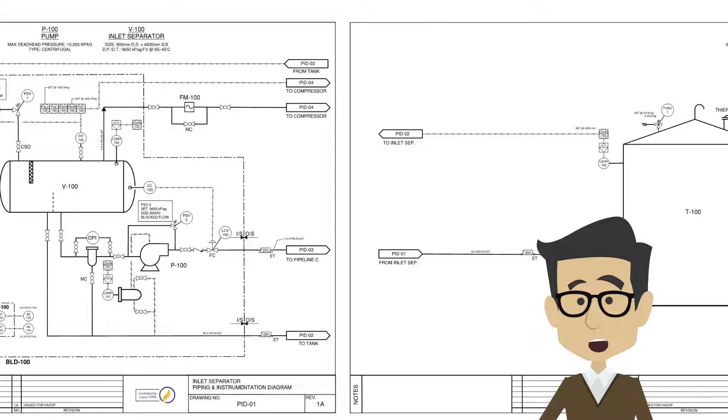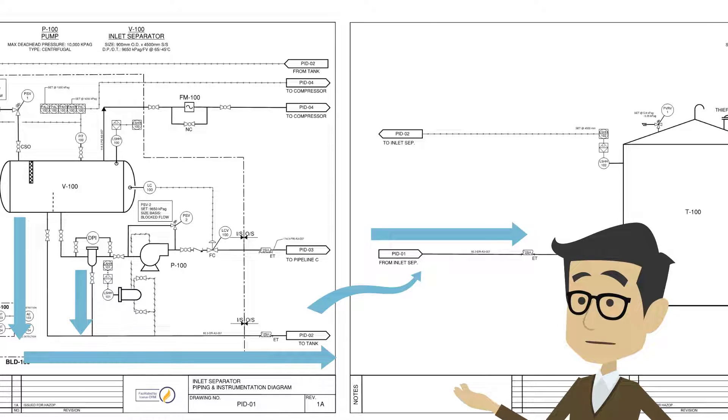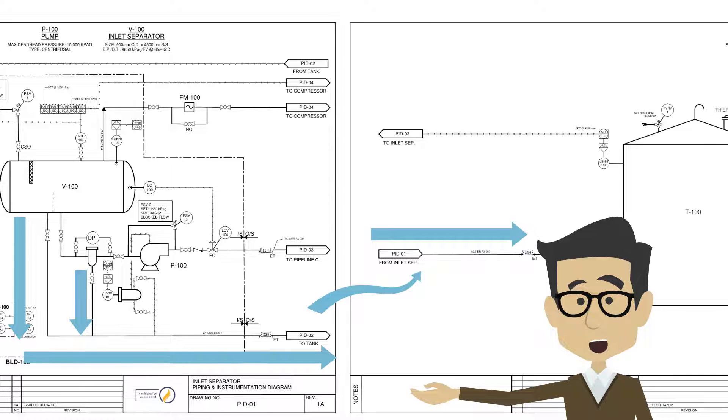First, let's look at the flow path of the products through the system. You can see our first drawing connects to the second one here, showing that the drain of the inlet separator and the basket strainer combine and flow towards the tank. Understanding how PNIDs are connected is essential to understanding the process.